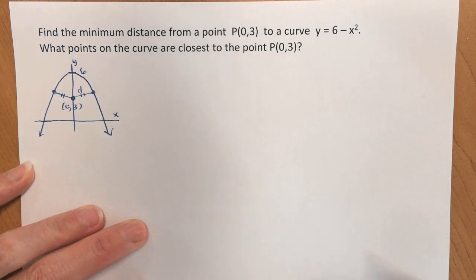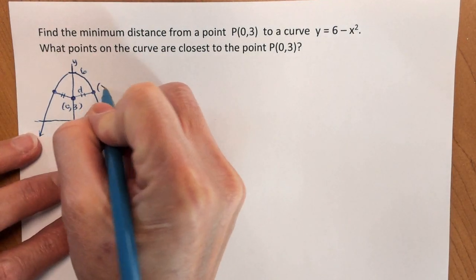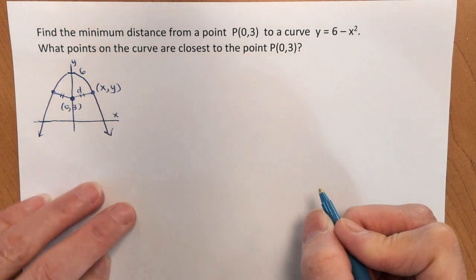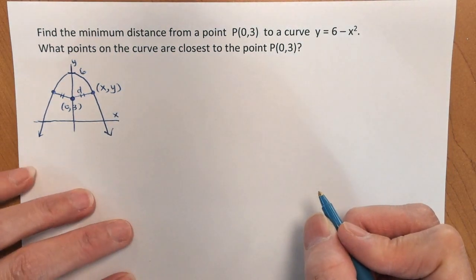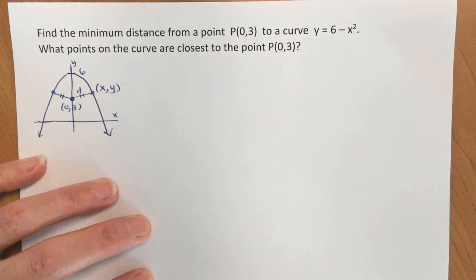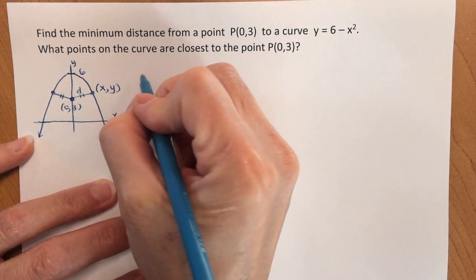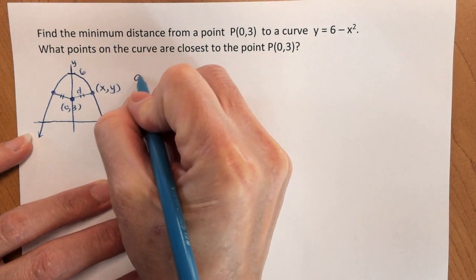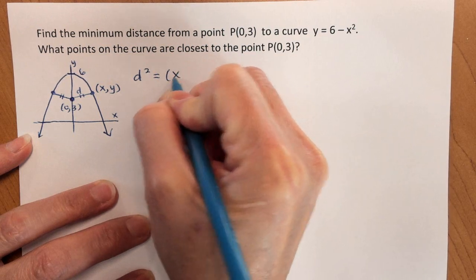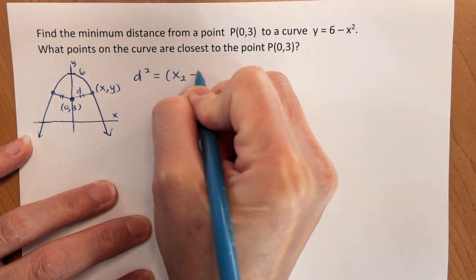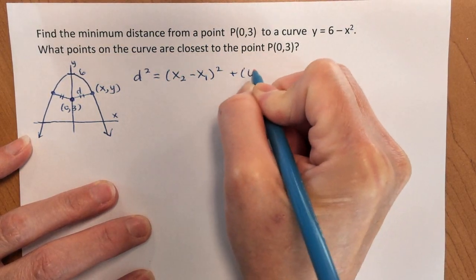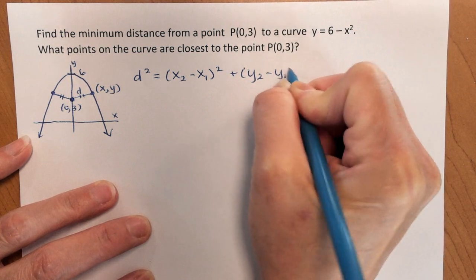It doesn't matter which point I pick — I'm just going to pick one of the points and call it (x, y). To solve this problem, we're going to use the distance formula. The formula for the distance between two points is d squared equals (x₂ minus x₁) squared plus (y₂ minus y₁) squared.